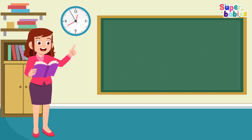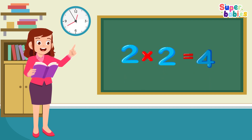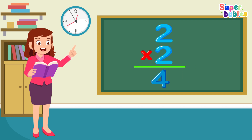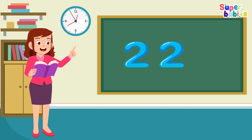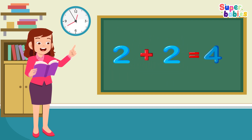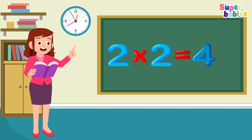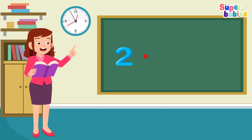Two times two equals four. Two, two equals four. One, two, two equals four. Two times two equals four.